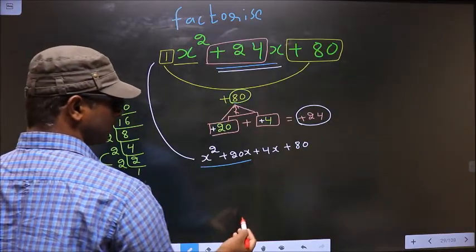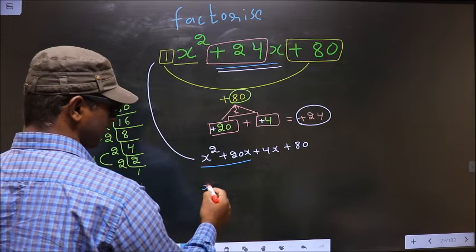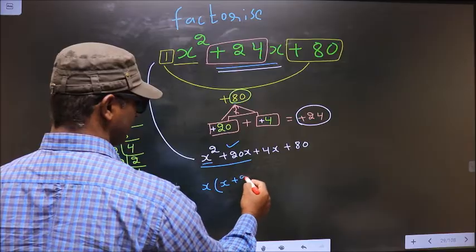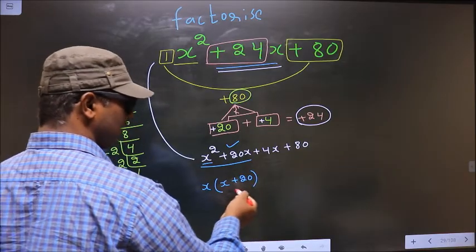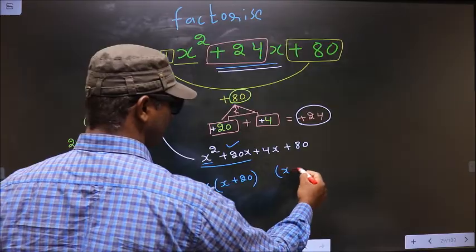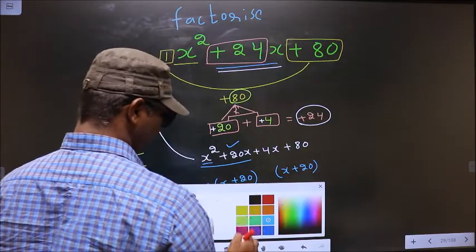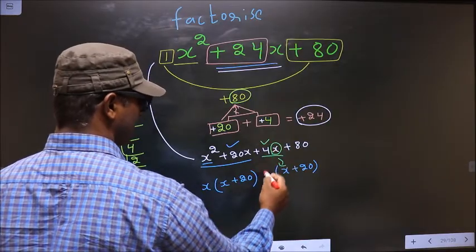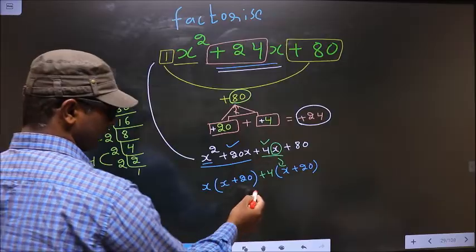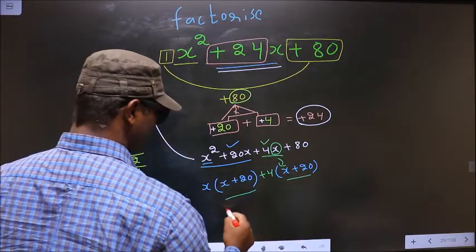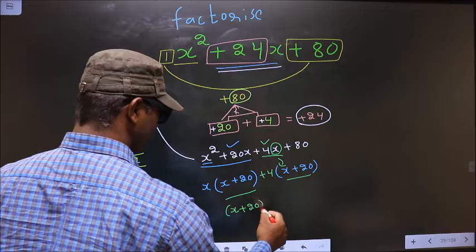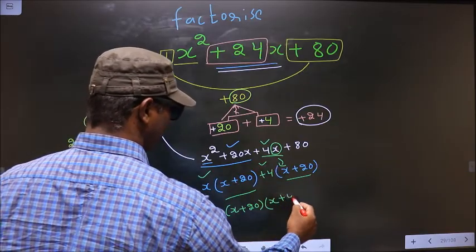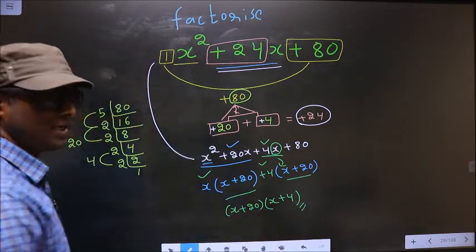Next, from these 2 terms what can be taken out common is x. So here you get x and here you are left with plus 20. Whatever you have got here, here also you should get the same thing. Now from this x has gone inside, so outside you are left with plus 4. Now you take out x plus 20 common. So here you have x and here you have plus 4. So this is our answer.